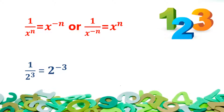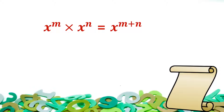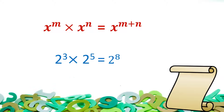Law 3 states: if two terms with the same base are under multiplication, then their powers get added. That is, x raised to power m into x raised to power n is equal to x raised to power m plus n. For example, in the multiplication of 2 raised to power 3 with 2 raised to power 5, the bases are the same — that is, 2 — so the powers get added and it is equal to 2 raised to power 8.